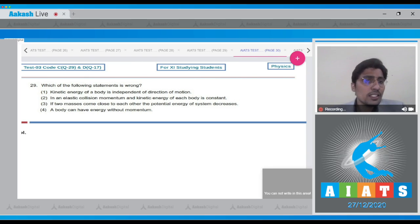Second statement says, in an elastic collision, momentum and kinetic energy of each body remains constant. Dear student, in question 29, in elastic collision, the kinetic energy of the system is conserved initially and finally. However, for each body, it may not be constant.